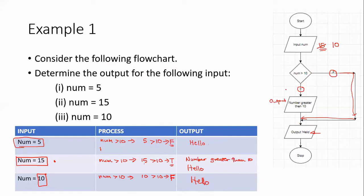As you can see, for num=5 and num=10 the output was only hello. In those instances the numbers were less than or equal to 10, so the condition was false and it only printed hello. But if you input a number greater than 10 — something like 15 — the condition becomes true, and then it prints 'number greater than 10' and also prints hello, as it did here.